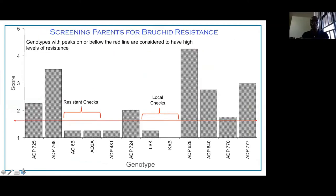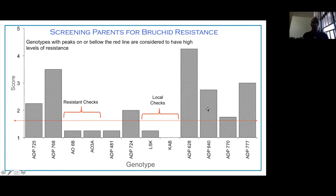We first screened the parents to check their resistance to the weevils, including the resistant parents. The graph shows the reaction of these materials to the weevils. The resistance checks — where we are getting our resistance, with the APA locus coming from tepary — are quite resistant. Looking at where the red line is the threshold, the other parents used that are agronomically superior are quite susceptible to the weevils, and you could see how badly damaged they were based on this scoring system.